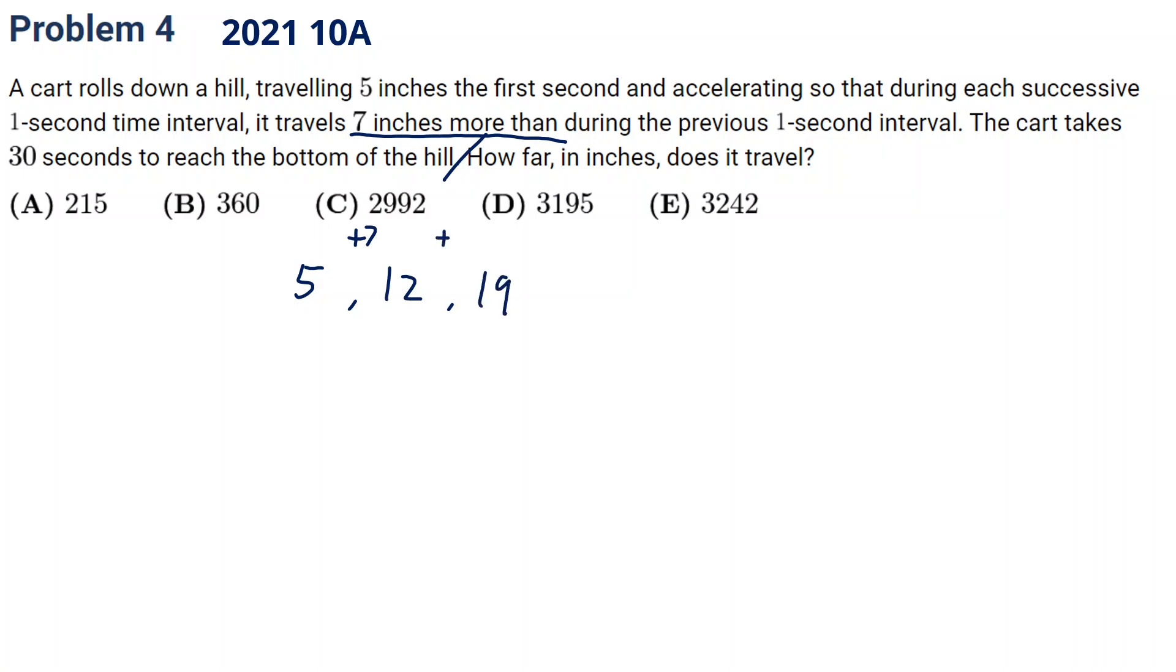This is a very typical arithmetic sequence until 30 seconds. So we can first get the last one, the last number. So it's 5 plus 7 times 29, right?